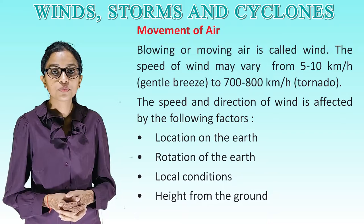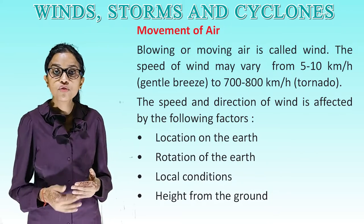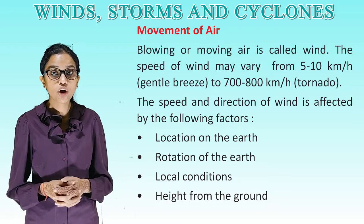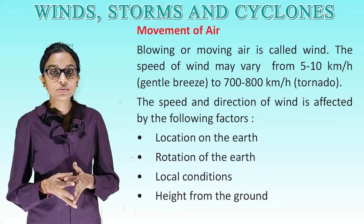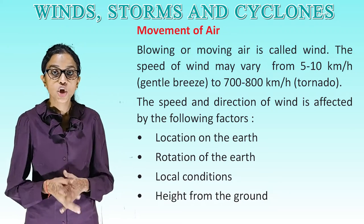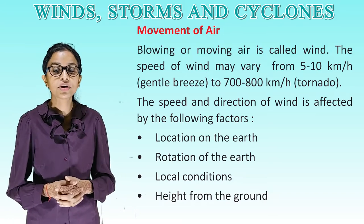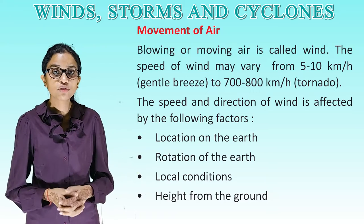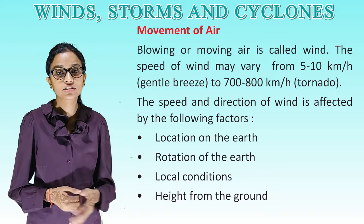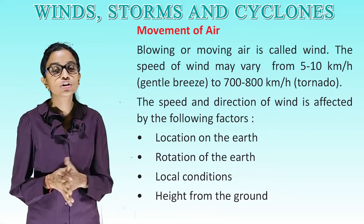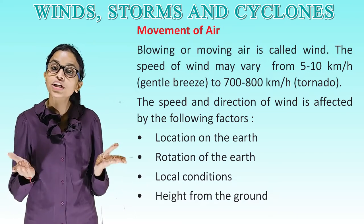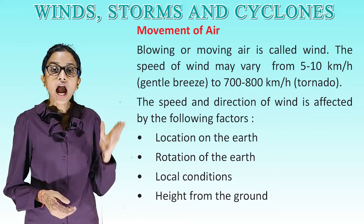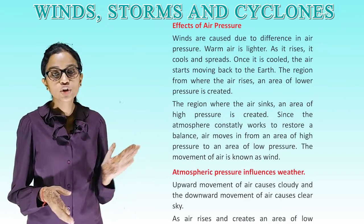Movement of air: Blowing or moving air is called wind. The speed of wind may vary from 5 to 10 km per hour (gentle breeze) to 700 to 800 km per hour (tornado). The speed and direction of wind is affected by the following factors: location on the earth, rotation of the earth, local conditions, height from the ground, and effects of air pressure.